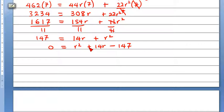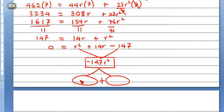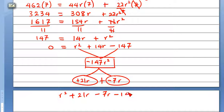So let's look for two factors that we multiply to get minus 147. When you multiply this and this, the result is going to be minus 147 r square. So let's split this into two again. I think it's going to be plus 21 r and minus 7 r. r square plus 21 r minus 7 r minus 147 is equal to 0.